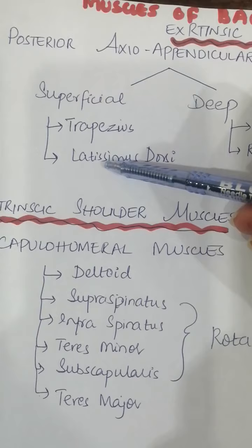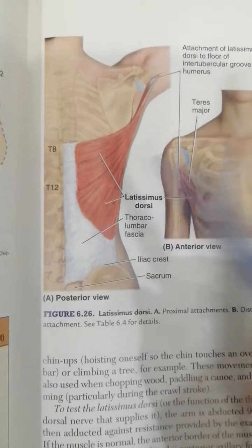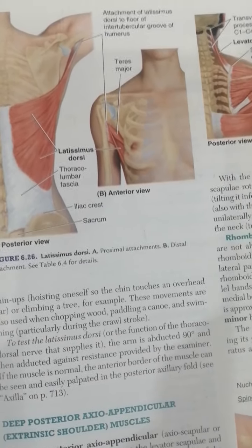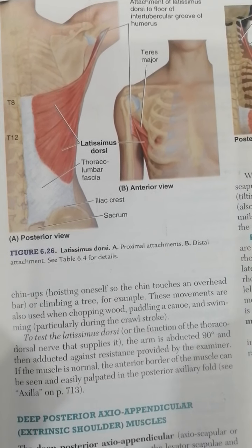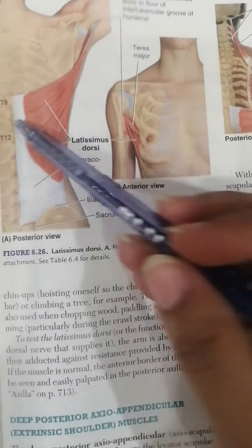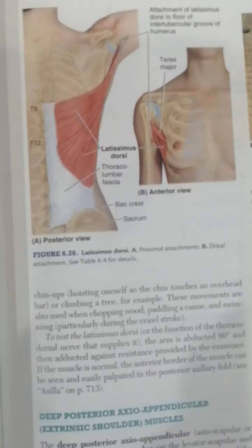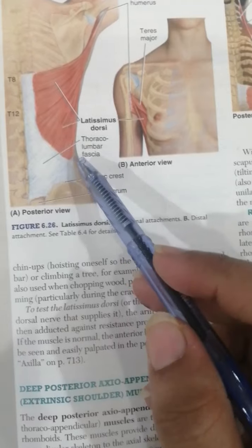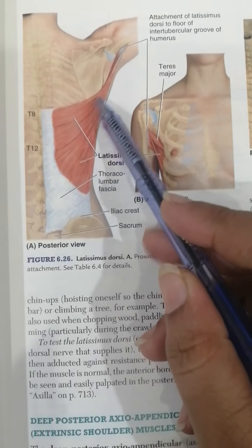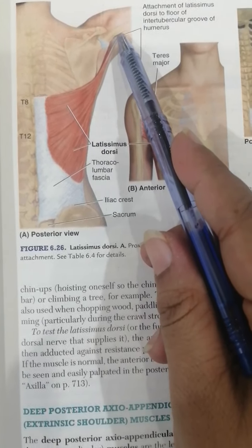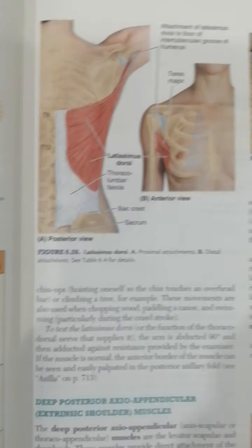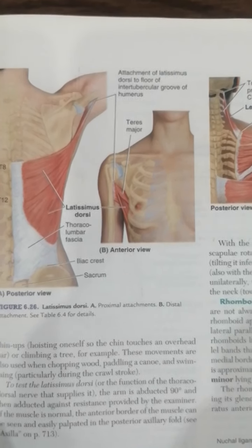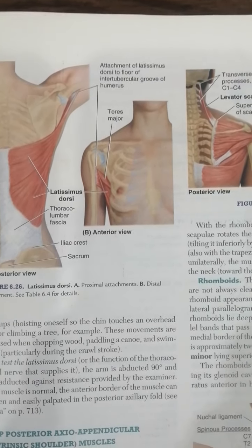After trapezius, we move to the latissimus dorsi, which is also a big muscle. Here you can see the latissimus dorsi. It originates from the spinous processes of the inferior six thoracic vertebrae, thoracolumbar fascia, iliac crest, and inferior three to four ribs. Its fibers run superiorly and attach over the floor of the intertubercular sulcus of the humerus.